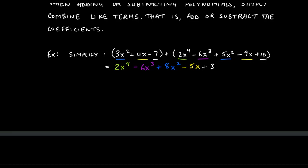Next is negative 6x cubed — I look for other x cubed terms and there are none, so I copy it down. The next lower power is x squared. I see 3x squared in the first polynomial and 5x squared in the second. I'm able to add these because of the plus sign between the polynomials, meaning I add like terms together. So I have 3x squared plus 5x squared.